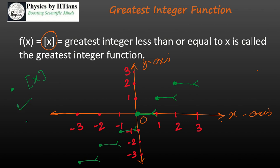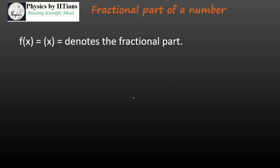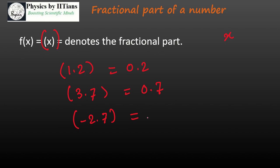So what is the fractional part of 1.2? It is just 0.2. What is the fractional part of 3.7? It is just 0.7. If you find the fractional part of negative 2.7, you have to consider negative 3 here, so it will be 0.3. We calculate the nearest least integer and then find the fractional part. So the fractional part is always positive and always between 0 and 1.